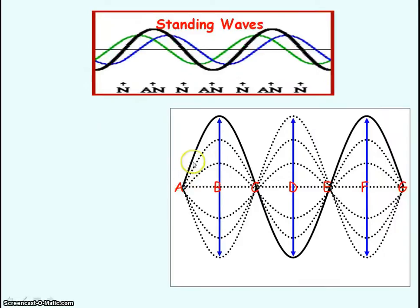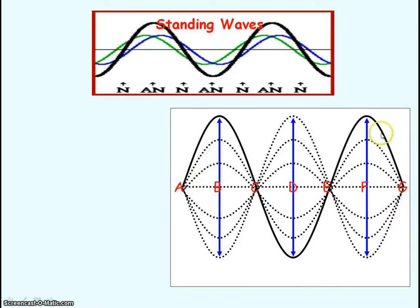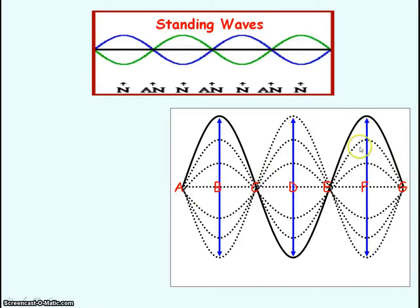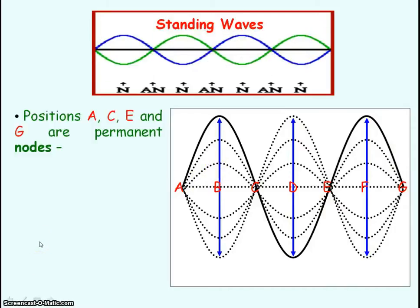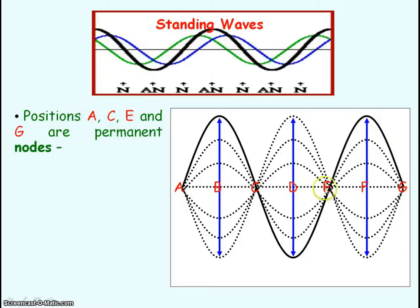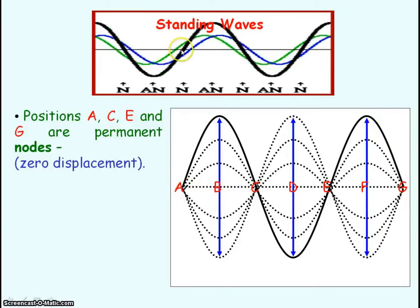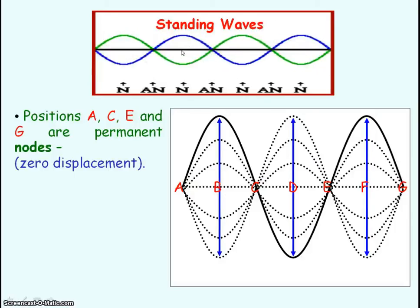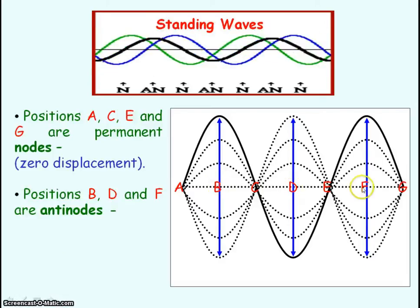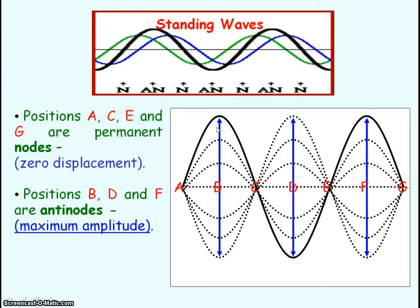This diagram shows the standing wave at different moments in time, from one extreme to the other and the in-between stages. Positions A, C, E, and G are known as nodes — they are permanent nodes because these points are always at zero displacement. Destructive interference is always occurring at these points. Positions B, D, and F are known as anti-nodes — this is where you get maximum amplitude and constructive interference is occurring.